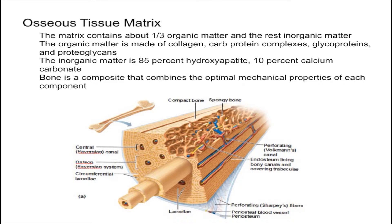The vast majority of inorganic matter is hydroxyapatite, also known as crystallized calcium phosphate salt, which makes up 85% of the inorganic matter of osseous tissue. Then 10% is calcium carbonate, and the rest consists of other minerals such as potassium, sodium, and magnesium. One thing to note is that the organic matter is made by osteoblasts.